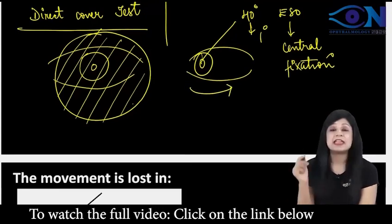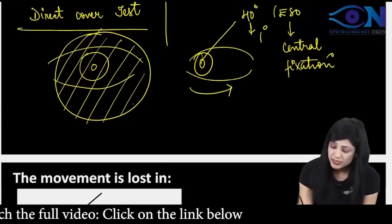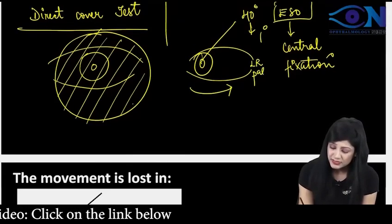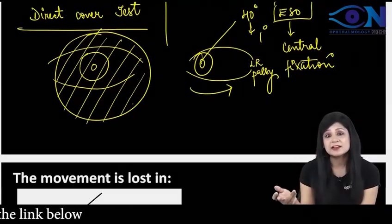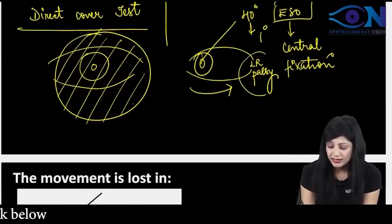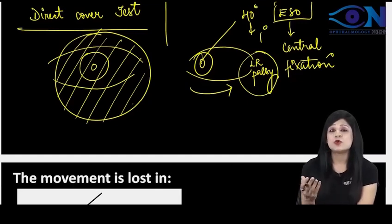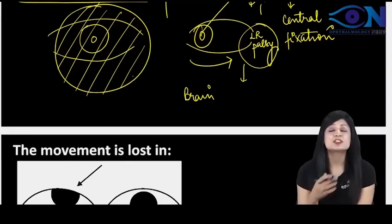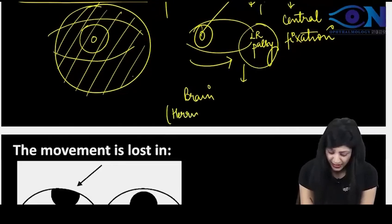And when I force this eye to take the central fixation, it has to move in the direction of action of paralyzed muscle. Like if there was an esotropia, that means this eye was having the lateral rectus palsy. That is why we were having the inward squint. Now in order to take the central fixation, it has to move out and it has to move this paralyzed muscle. Now paralyzed muscle cannot move and therefore it will try to draw the energy from the brain. But brain says that sorry, I don't have any partiality because we follow Herring's law.